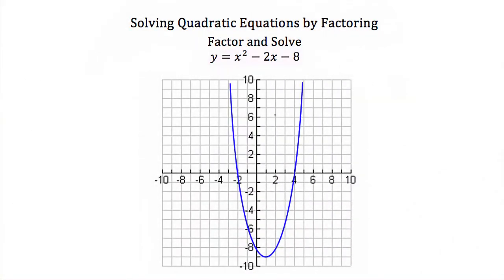So let's see how we can use this to solve a quadratic equation. Here we have y is equal to x squared minus 2x minus 8. Now when we solve a quadratic equation, we're looking for x intercepts, or when y is equal to zero. So if we set y is equal to zero, we get x squared minus 2x minus 8 is equal to zero.